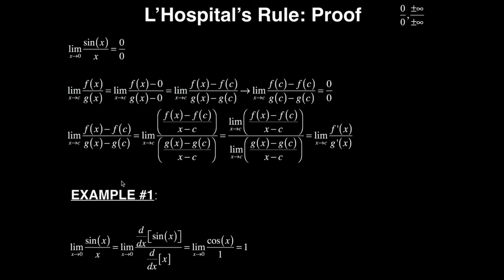Let's do a simple example: the limit as x goes to 0 of sin(x) over x. L'Hôpital's rule says take the derivative of the numerator and the derivative of the denominator. The derivative of sin(x) is cos(x), and the derivative of x is 1. Now plug in 0: cos(0) is 1, so this limit becomes 1 over 1, which is 1. That's all L'Hôpital's rule is. If you have something in the form 0 over 0 or infinity over infinity, take the derivative of the top divided by the derivative of the bottom, and keep doing that until it's no longer indeterminate. Note: you are independently taking the derivative of the numerator and denominator — you are not doing the quotient rule.